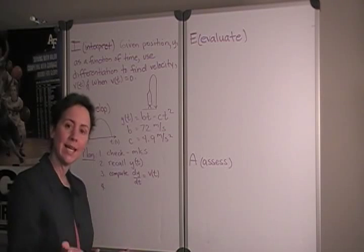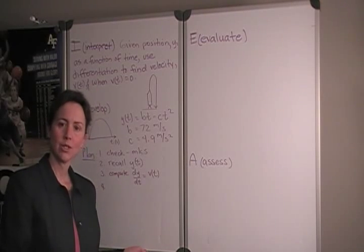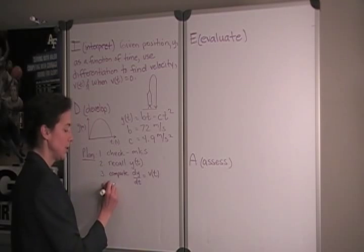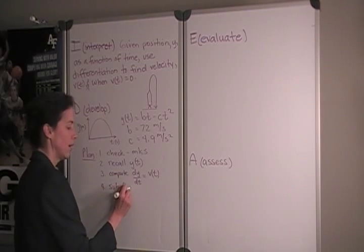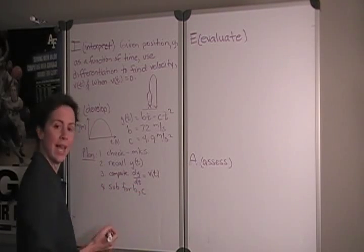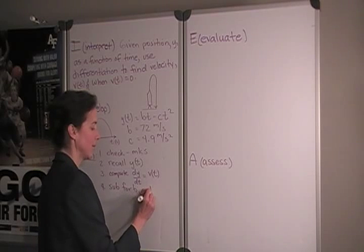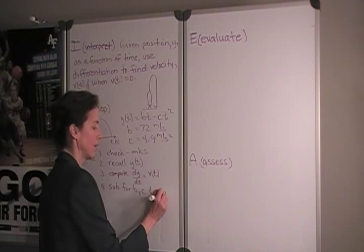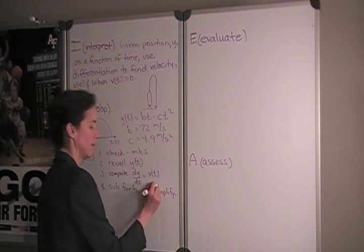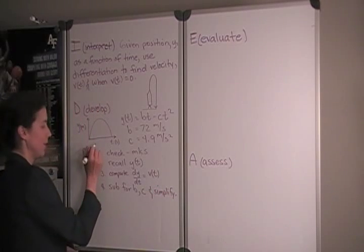Notice we haven't made any substitutions yet. Now that we have a general expression for the velocity, we will substitute for b and c, and if necessary, simplify. Now, this was part a of the problem.